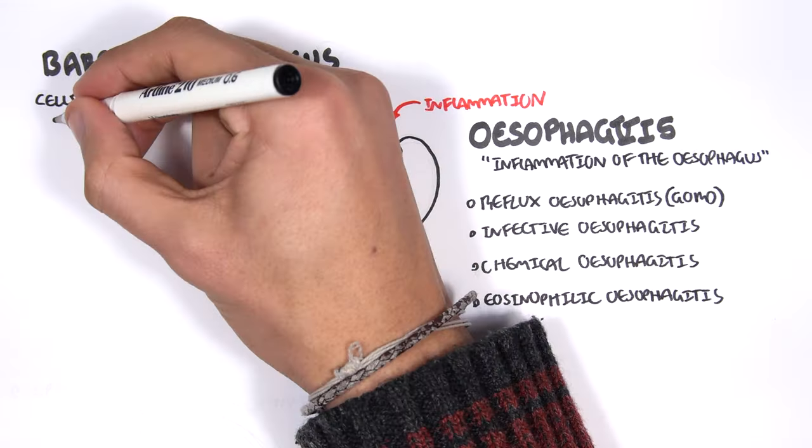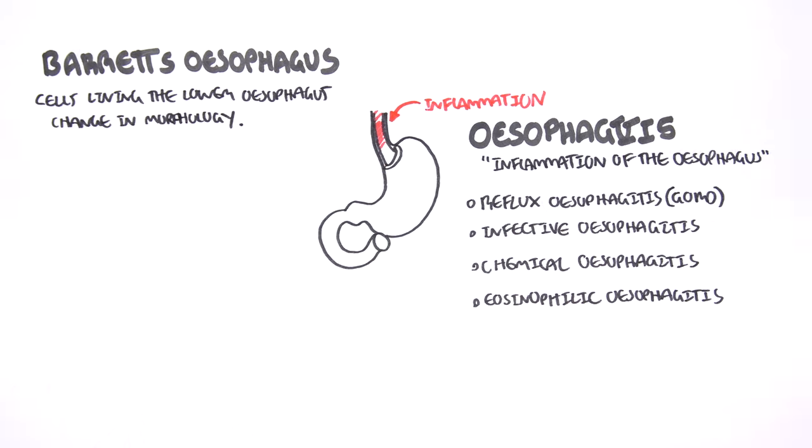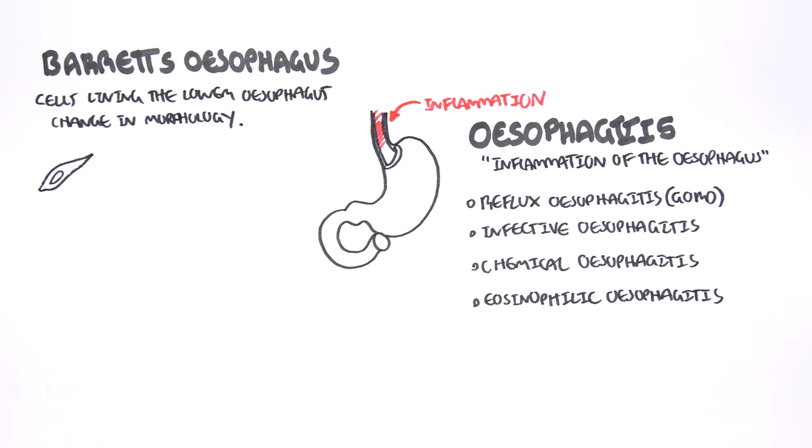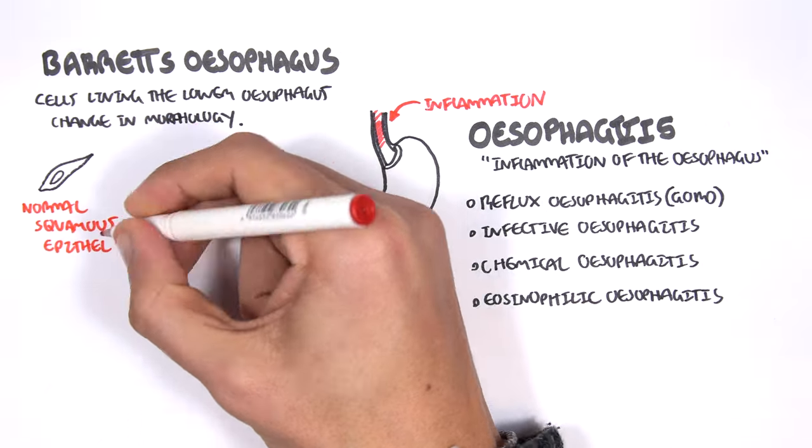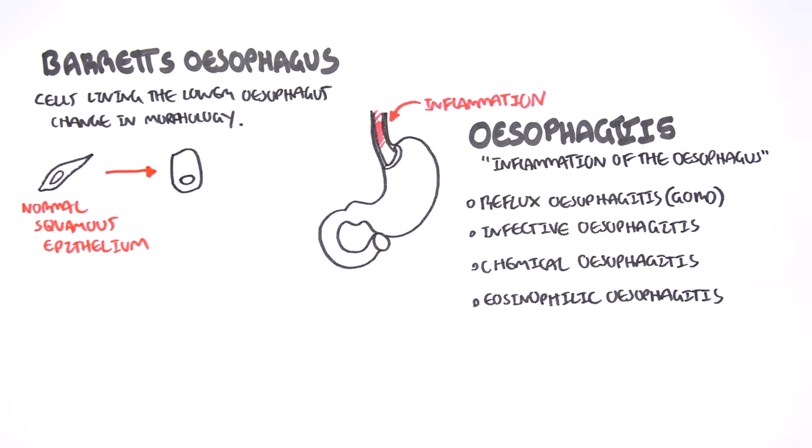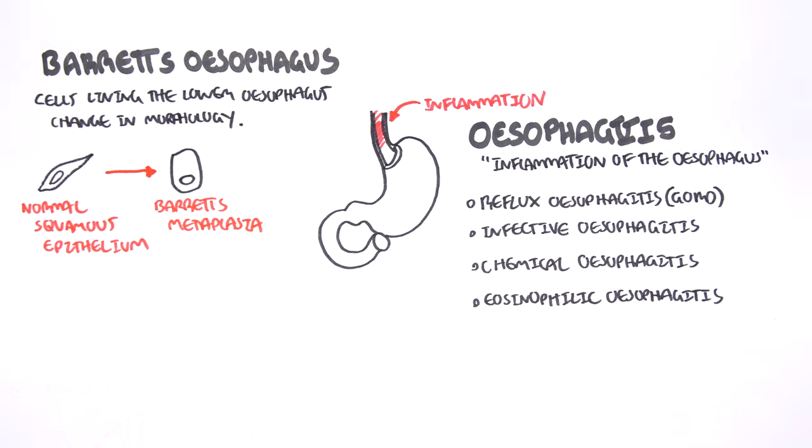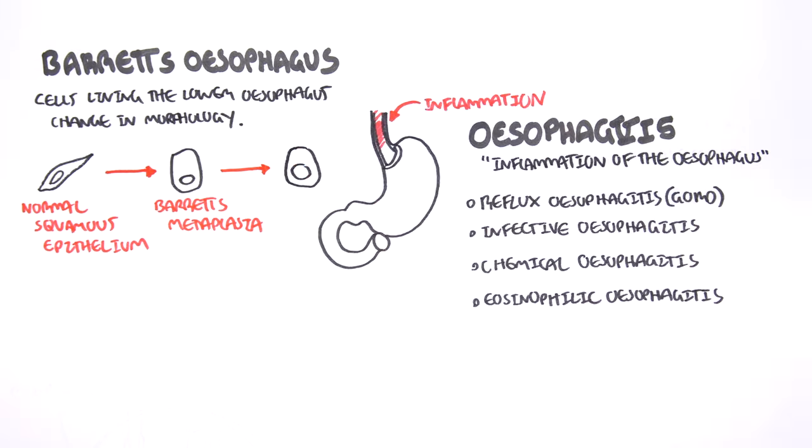In the last part, the third part, the cells that line this area essentially change in shape. In this area, we normally have squamous epithelial cells, but these change to Barrett's metaplasia, which can subsequently lead to adenocarcinoma of the esophagus.